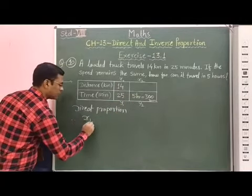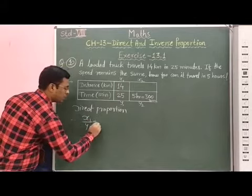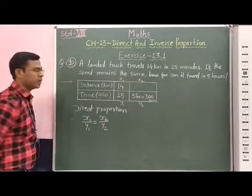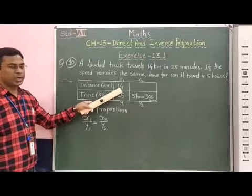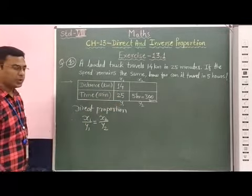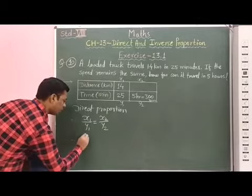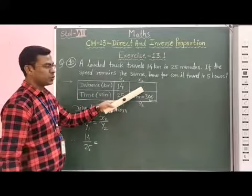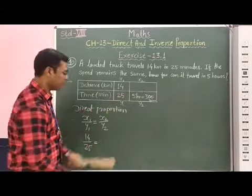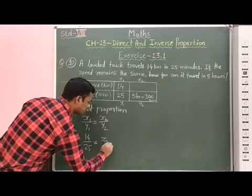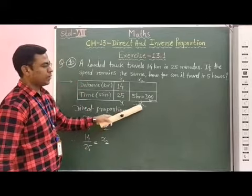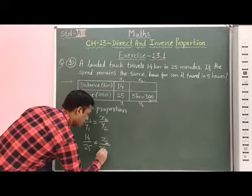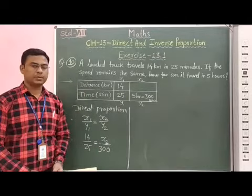Therefore, X1 upon Y1 is equal to X2 upon Y2. Now, X1 equals 14 and Y1 is equal to 25. Therefore, 14 upon 25, which is equal to, here X2, we have to find out. Therefore, we can write here X2 as it is. Now, Y2 is equal to 300 minutes. Therefore, here, divided by 300.